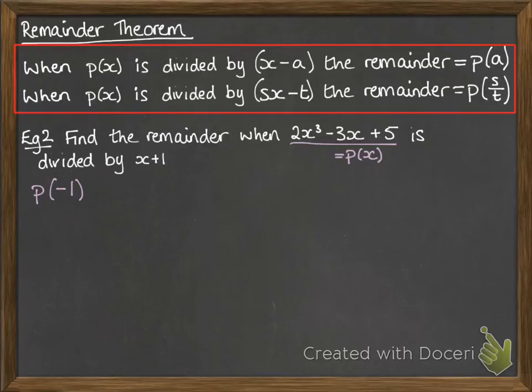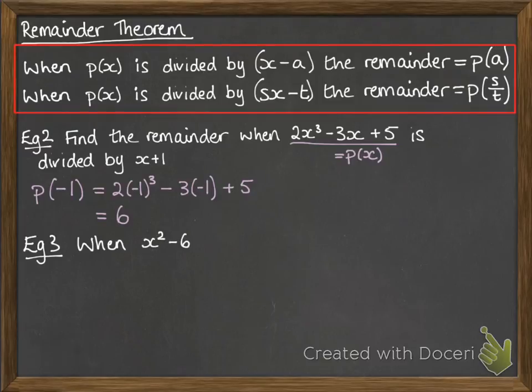Then we put in the opposite type of value, so the -1 goes into the polynomial. If we put that value in, then we get 6. So the remainder was 6.